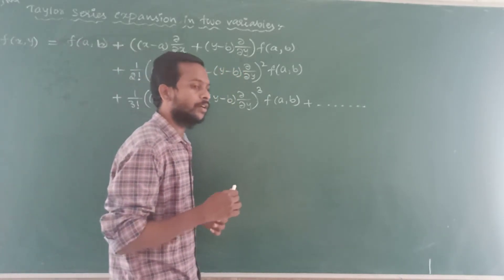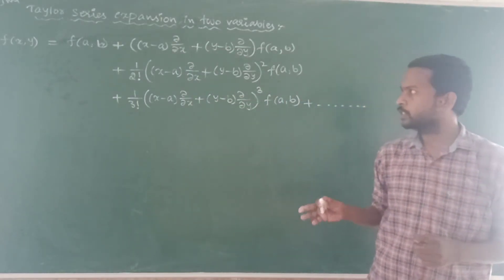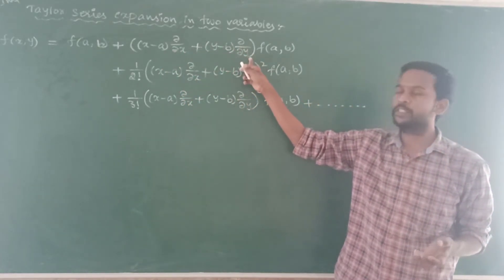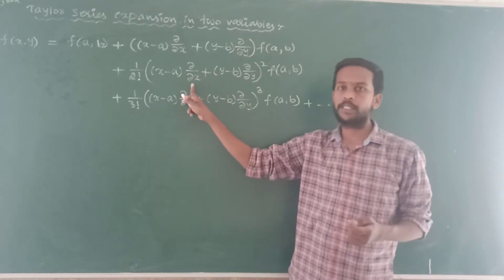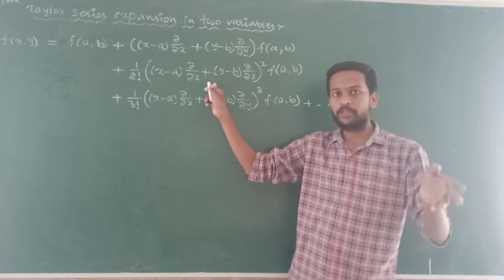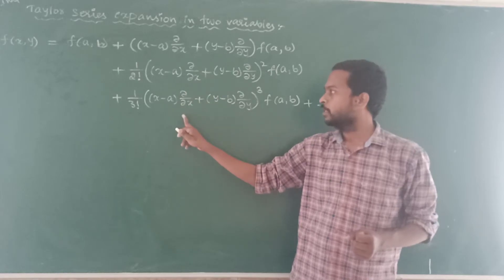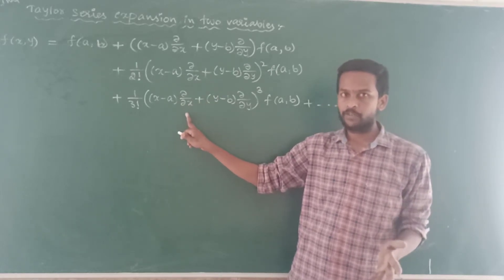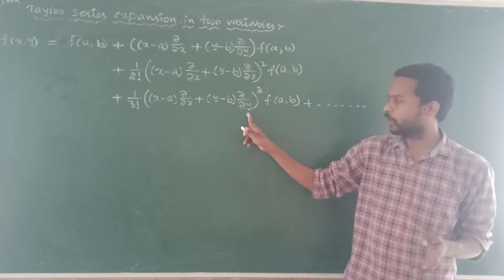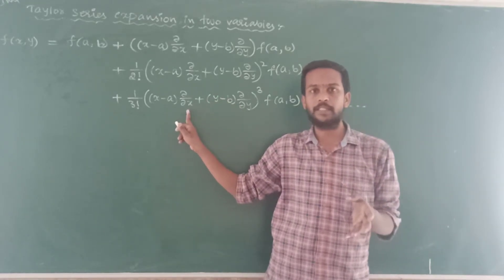If you are given any question like a polynomial or any other function, first of all you should find the first partial derivative with respect to x, first partial derivative with respect to y, then second partial derivative with respect to x, second partial derivative with respect to y, and the mixed partial derivative ∂²/∂x∂y. Then find the partial derivative with respect to x three times, with respect to y three times, and with respect to x two times then y one time.